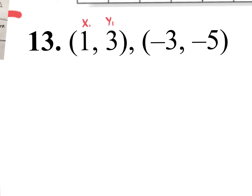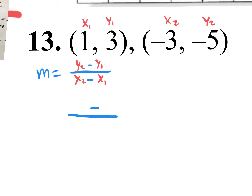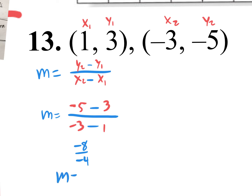So x1, y1, x2, y2. Let's start with our slope formula: m equals y2 minus y1 over x2 minus x1. Start with the division and the subtractions first, then plug in your values. Your y2 value is negative 5 — put negative 5 in the upper left. Your y1 value is 3 — put 3 in the upper right. Your x2 value is negative 3 — put that in the bottom left. And x1 is 1 — put that in the bottom right. Up on top we have negative 5 minus 3, which is negative 8. On the bottom, negative 3 minus 1, which is negative 4. Negative 8 divided by negative 4 gives you a positive 2. So the m value is positive 2.